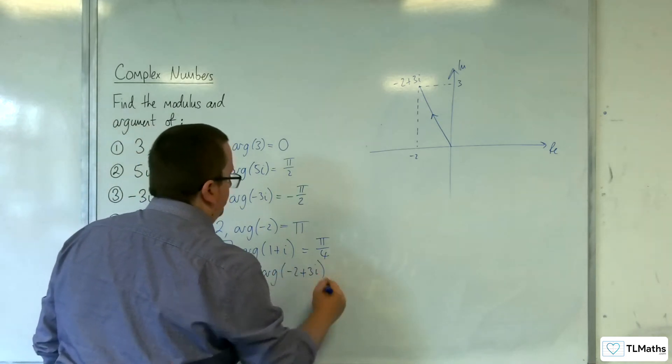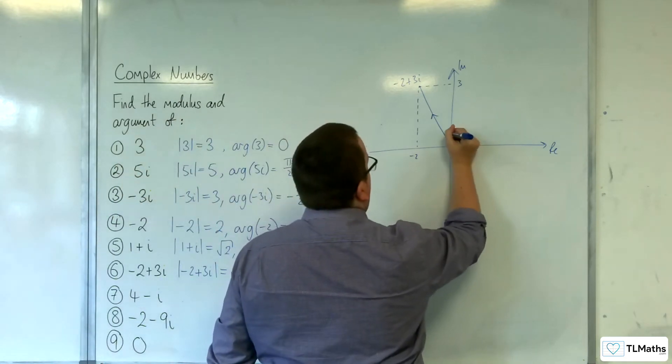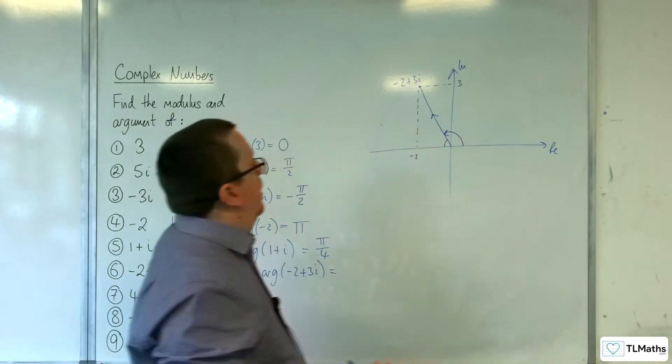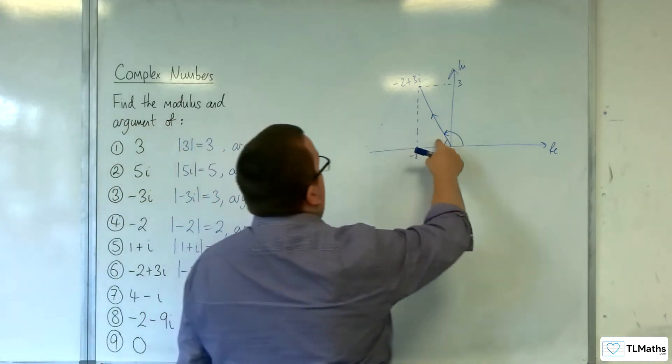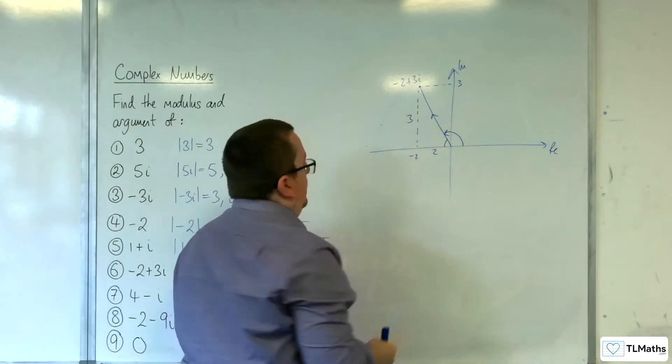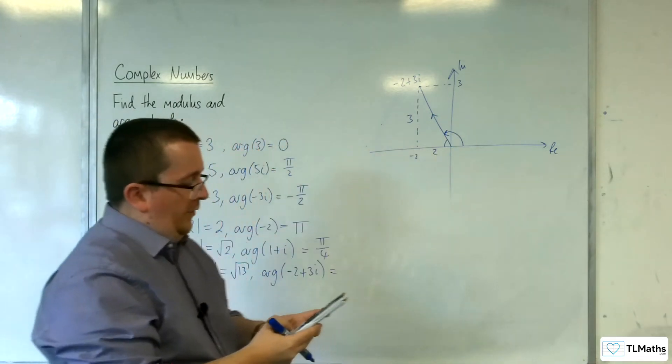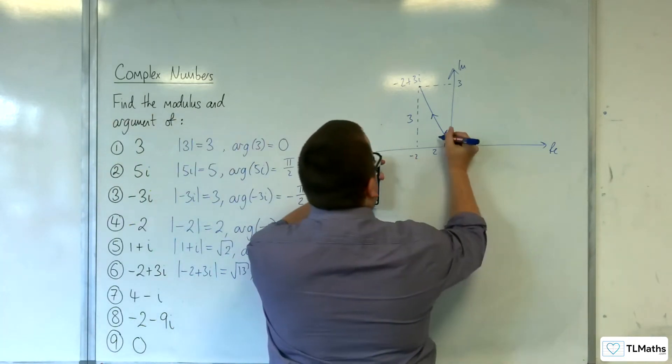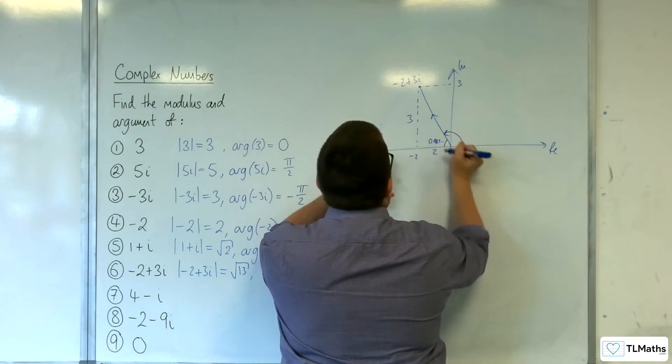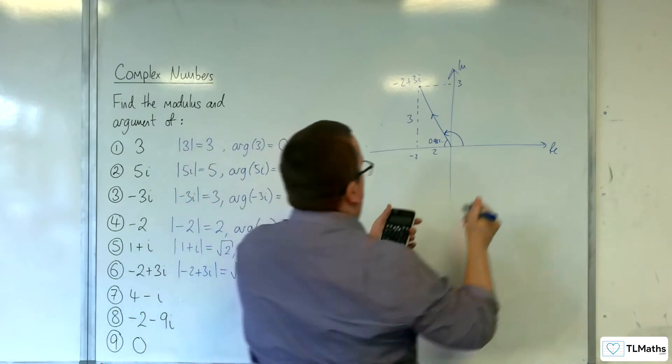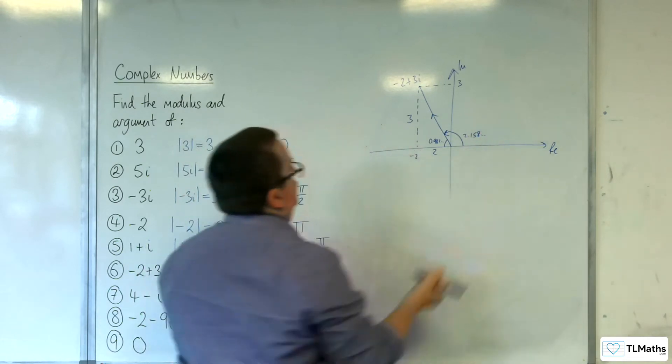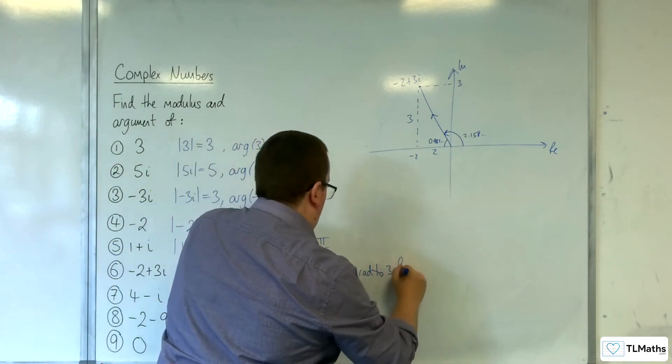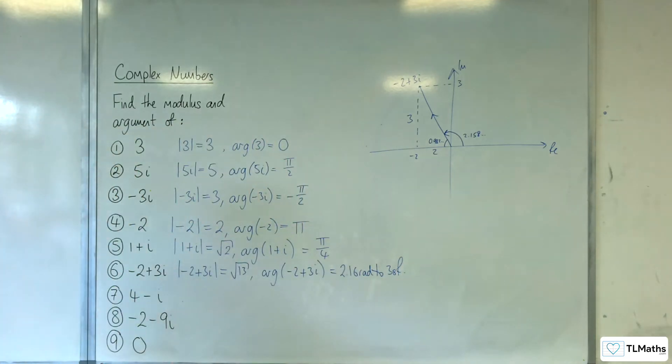Its argument is this angle here. If I work out that angle and subtract it from π, then I've got the angle that I want. This angle here, that's 3 and 2. It's going to be the inverse tan of the opposite over the adjacent, so 3 over 2. Remember, your calculator needs to be in radians. Get it the right way around. That angle is 0.982, etc. Subtract it from π, and we get 2.158, etc. So 2.16 radians to 3 sig fig.